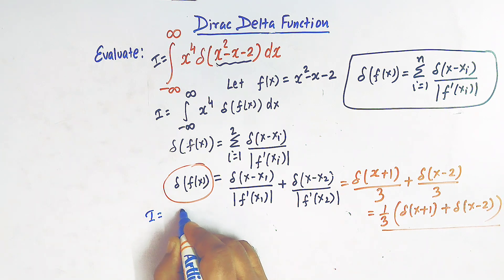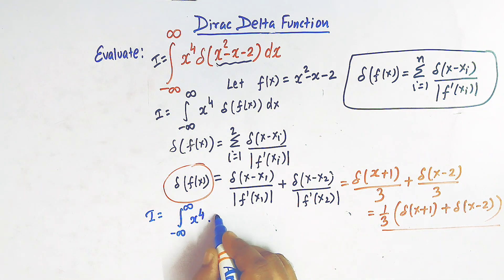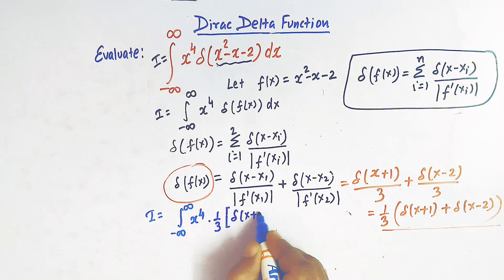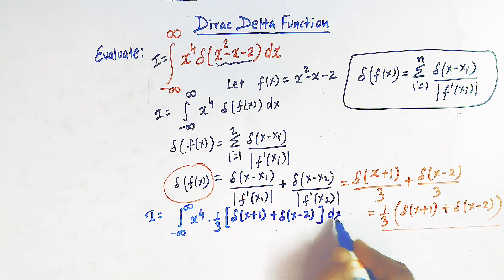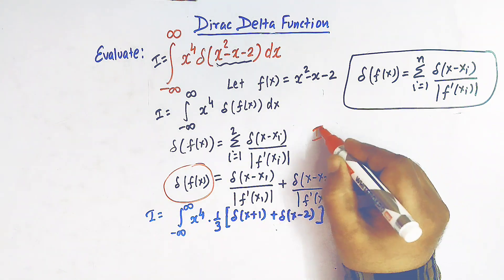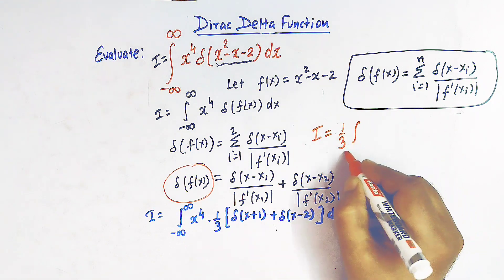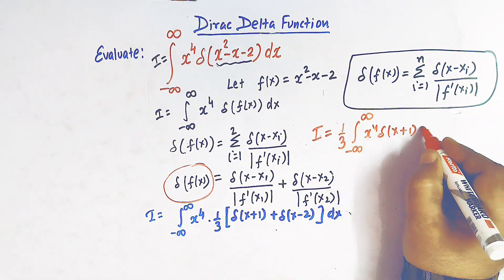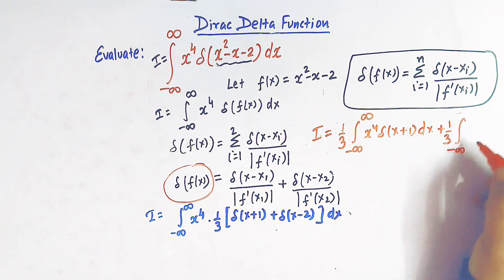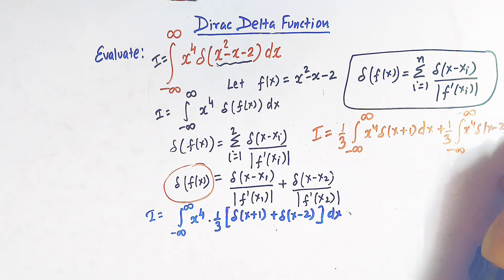Substituting this expression into our integral, I equals the integral from minus infinity to infinity of x raised to 4 times (1/3)[delta(x plus 1) + delta(x minus 2)] dx. We can split this into two integrals: I = (1/3) times the integral of x raised to 4 times delta(x plus 1) dx, plus (1/3) times the integral of x raised to 4 times delta(x minus 2) dx.